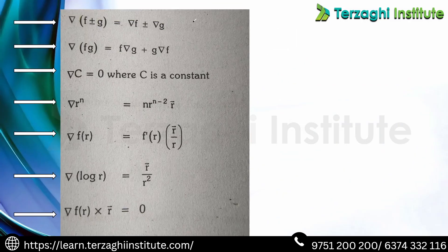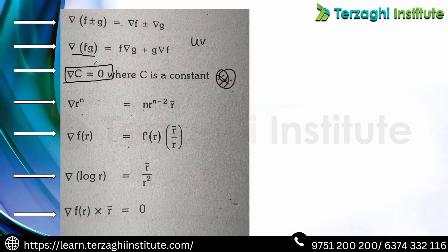Next: del properties. These are important for direct questions. Property 1: ∇(f ± g) = ∇f ± ∇g. Property 2: ∇(fg) — the uv formula — equals f·∇g + g·∇f. Important property: ∇(c) where c is a constant equals 0, because differentiation of a constant is zero.